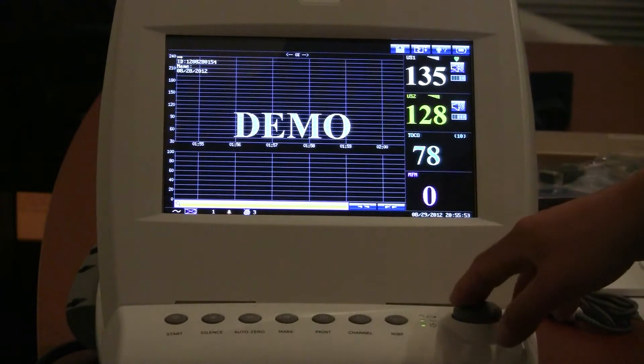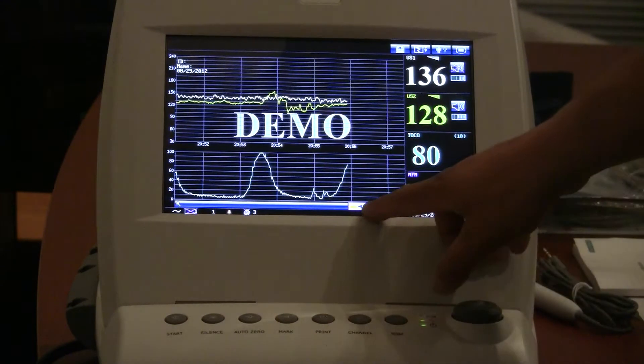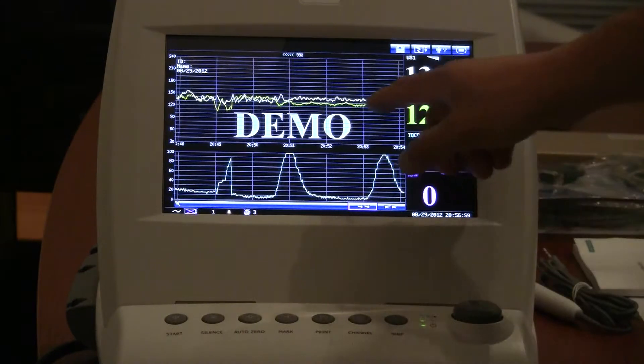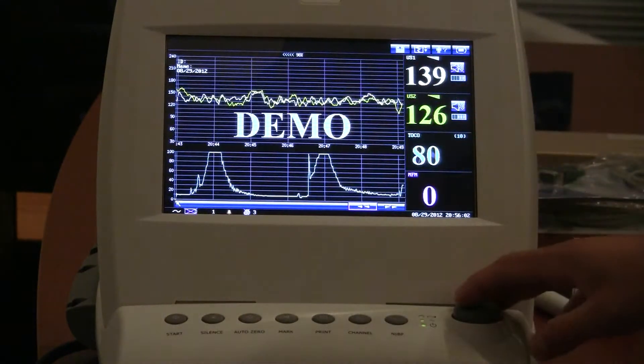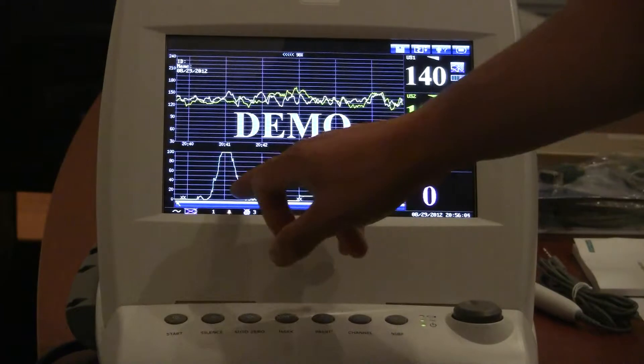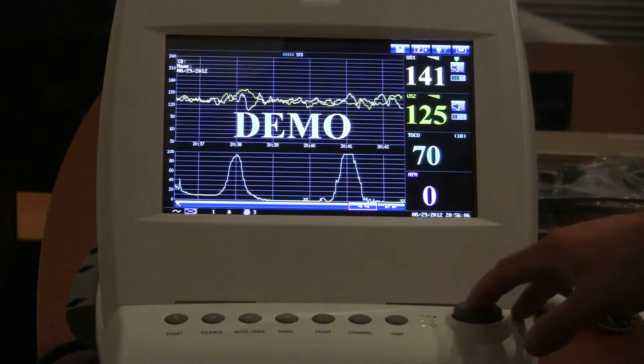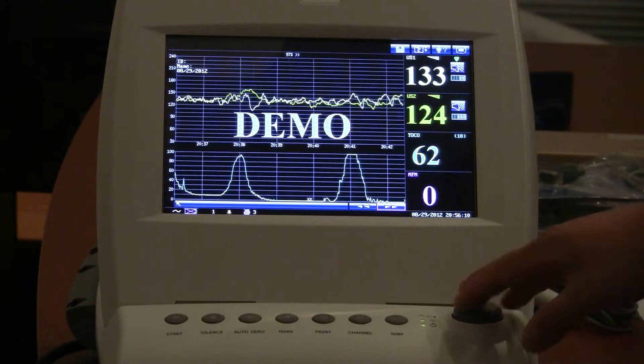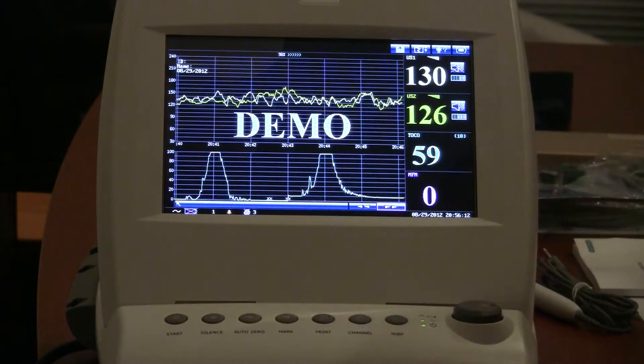We started this exam actually yesterday and it's been running for quite some time. So we can click on that and actually click over here to the scroll button and ask it to scroll through some of the history. Right now we're going backwards to see some of the contractions and what the fetal heart rates have been doing. Now we can switch it to forward, hit forward, and it'll come back all the way to real time.